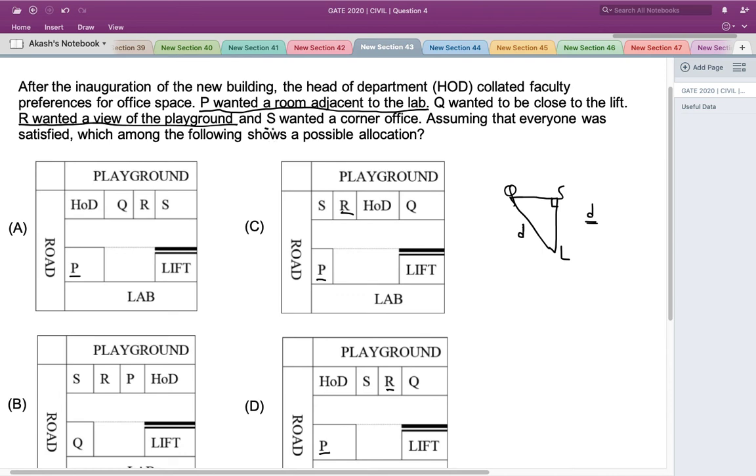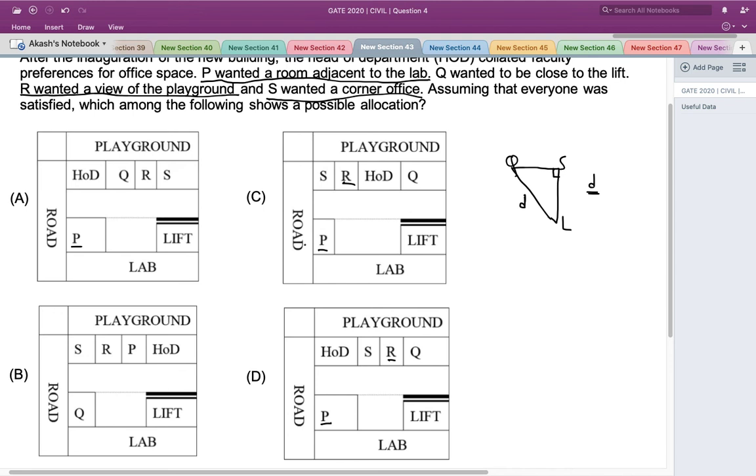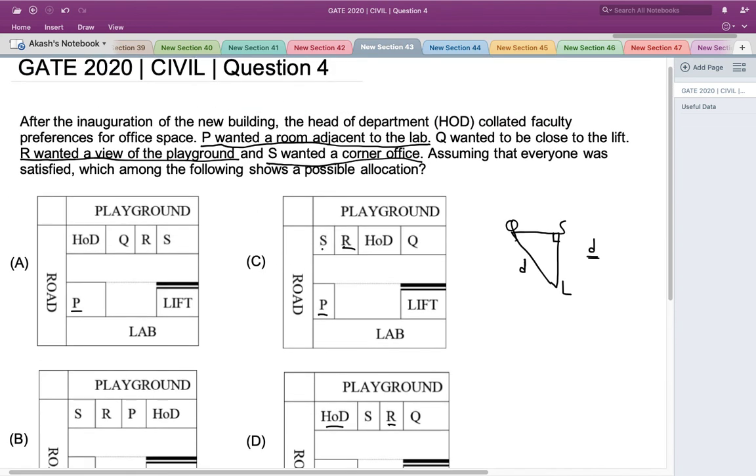The last condition says that S wanted a corner office. This condition is only satisfied in option C. In option D, S has got a room to which HoD room is located to its left side and R's room is located to its right side. But in option C, no room is located to its left side; only R's room is located to its right. So S's room is in the corner, therefore satisfying the last condition. Hence, the only option which satisfies all the conditions is option C. So option C is the right answer. Thank you.